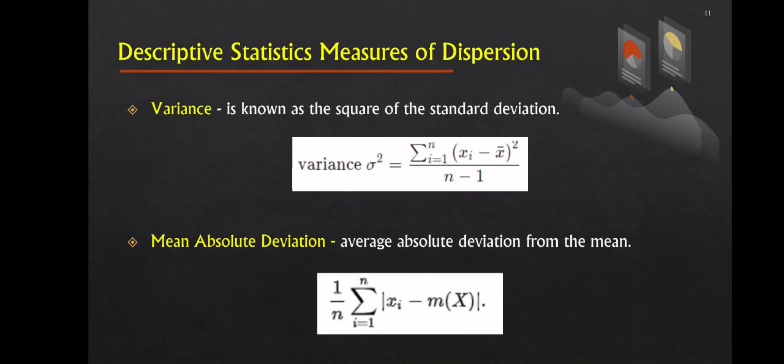Next, we have variance, which is known as the square of the standard deviation. And mean absolute deviation, which is the average absolute deviation from the mean. The slide shows the formulas for variance and mean absolute deviation.